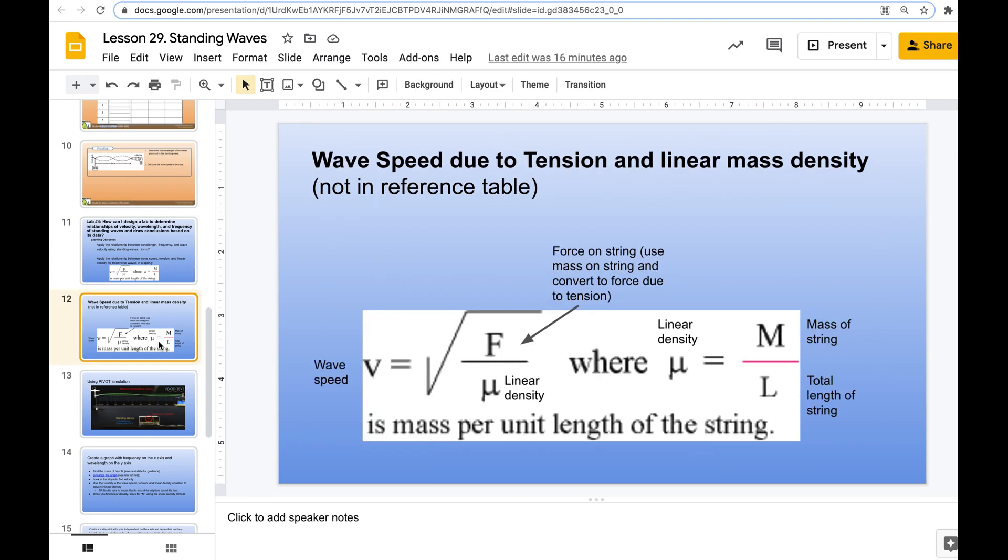Wave speed due to tension and linear mass density. So wave speed is velocity here, equals the square root of the force on the string. So use the mass on the string and you're going to convert that to force due to tension. So we're going to use an equation from earlier in the year, mostly that force equals mass times gravity, divided by mu of the string.